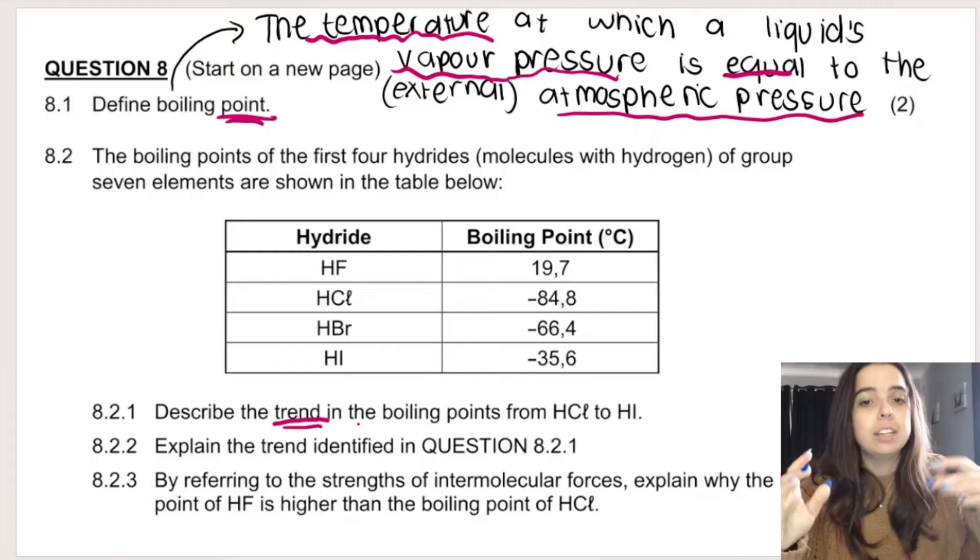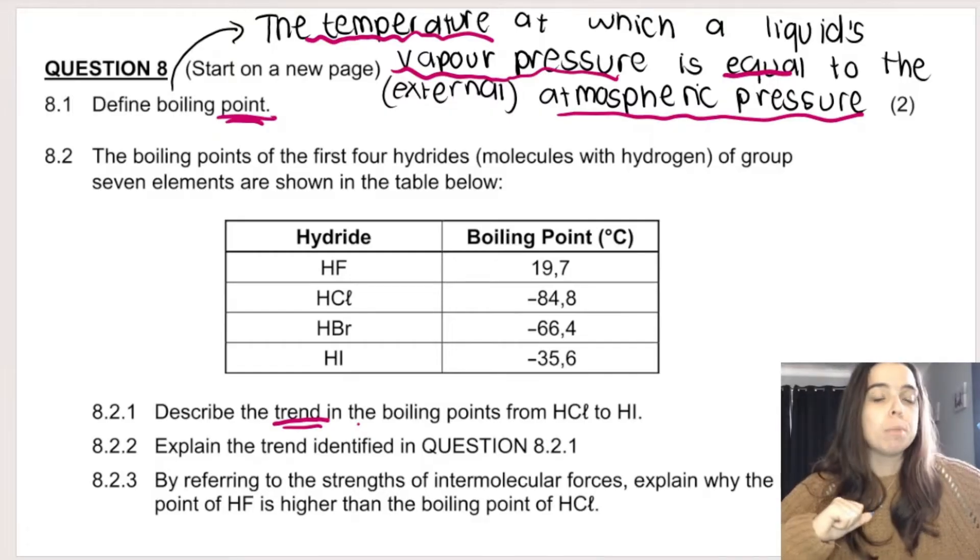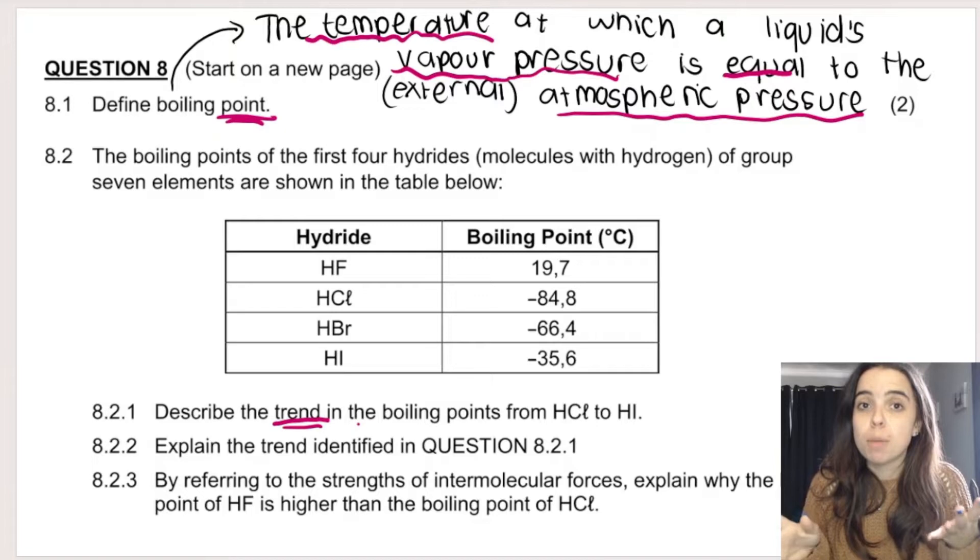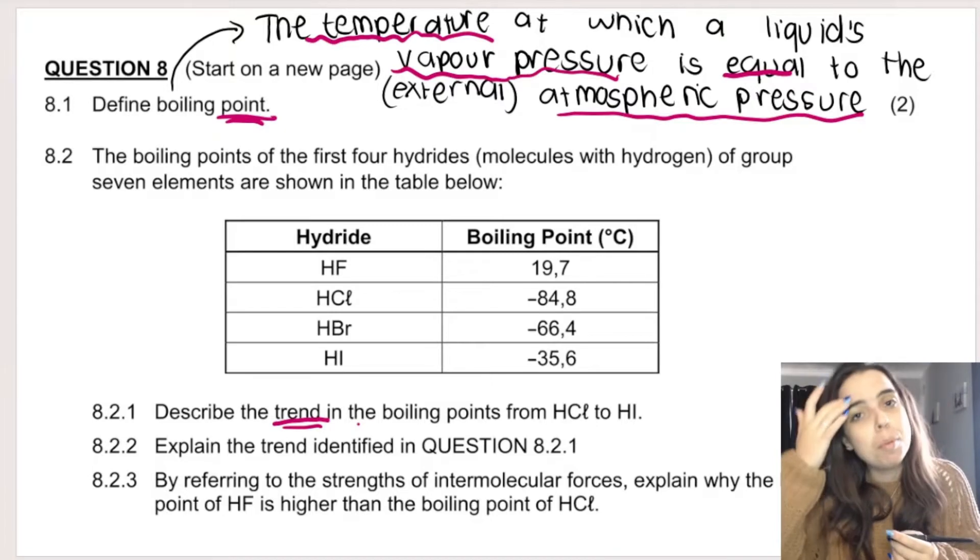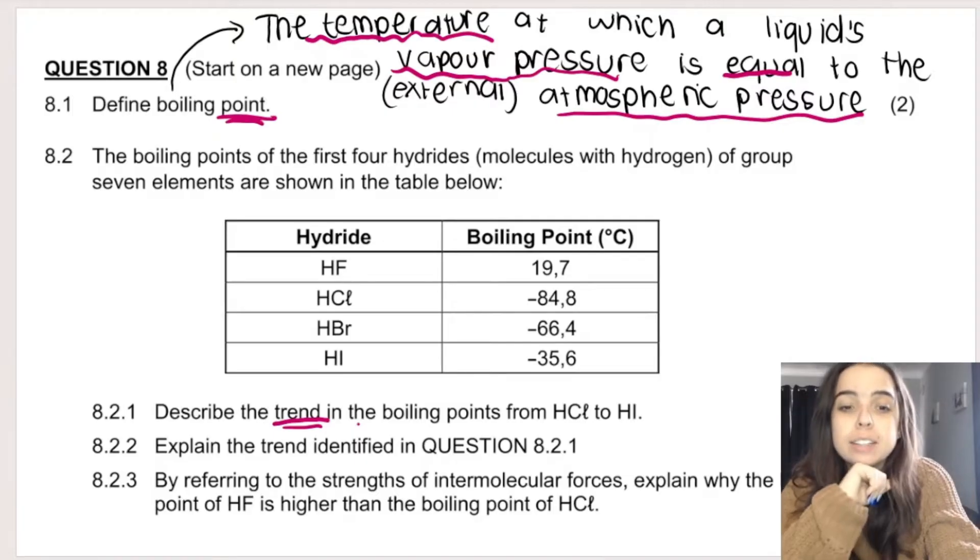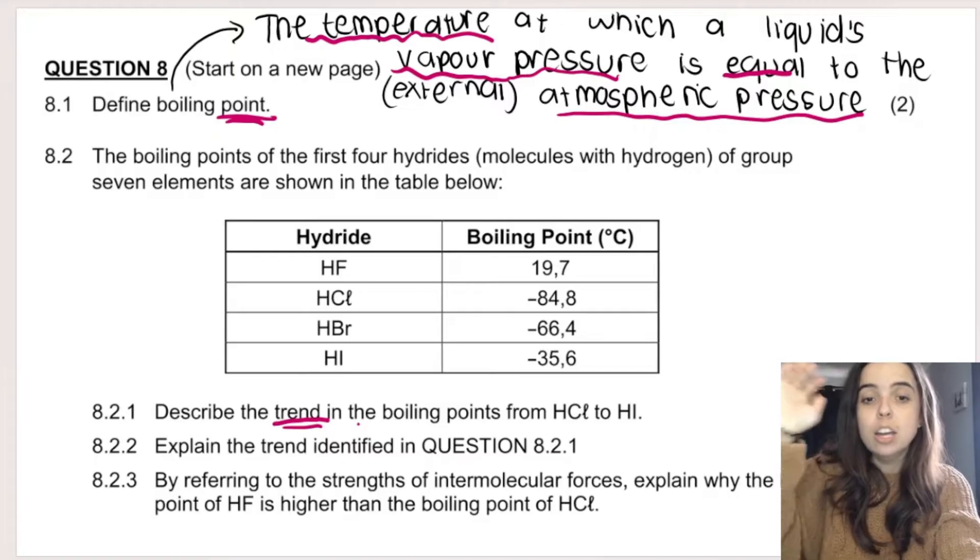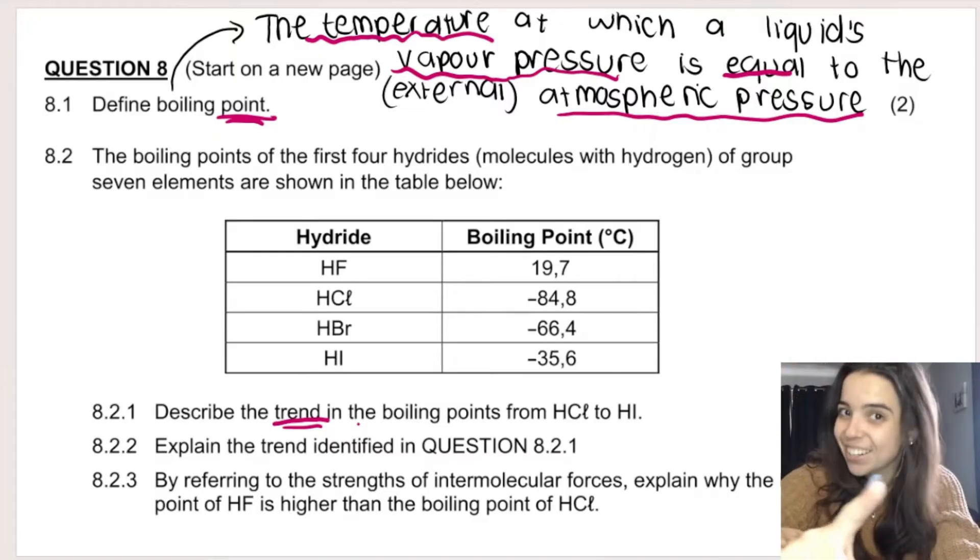The first question says describe the trend in boiling points. When they say the trend, they want to know if as you go from HCl to HI, are the boiling points increasing or decreasing. In this case, the trend in boiling points would be that as you move from HCl to HI, the boiling points increase.